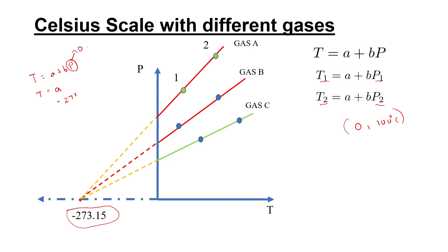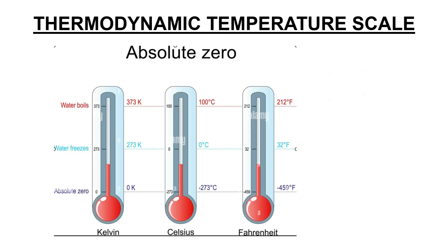When pressure is zero, the temperature equals A, which is minus 273.15 degrees Celsius. This is the minimum possible temperature — absolute zero. At absolute zero, molecular vibration becomes zero. This temperature scale is called the Kelvin scale, which is based on absolute zero.